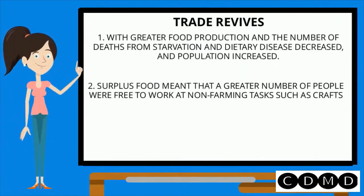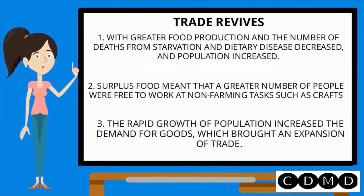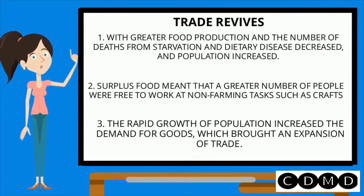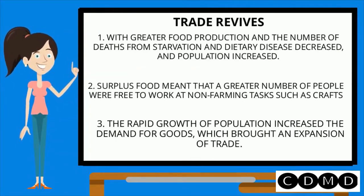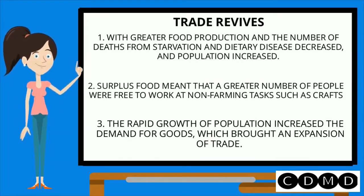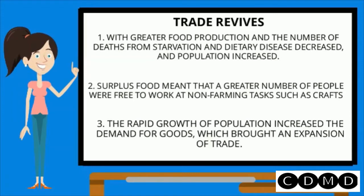Trade revives. With greater food production, the number of deaths from starvation and dietary disease decreased and population increased. Surplus food meant that a greater number of people were free to work at non-farming tasks such as crafts. The rapid growth of population increased the demand for goods, which brought an expansion of trade.